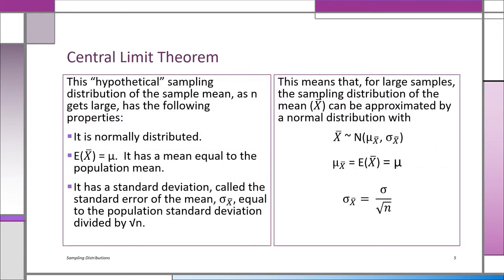This is the central limit theorem. This is a hypothetical sampling distribution of the sample mean — that's the x-bar — if n is relatively large. Don't confuse x-bar and x. x-bar is the sample mean, so it has to be based on a certain sample size. We're looking at x-bars and their distribution. If n is relatively large — we'll use 50 as a cutoff — the x-bars will follow a normal distribution. The expected value of x-bar, that's the average of all the averages, is mu.